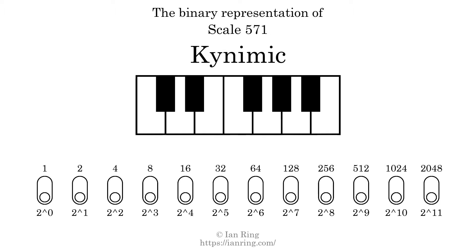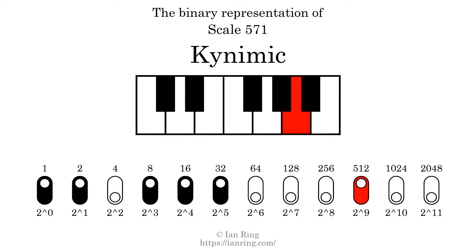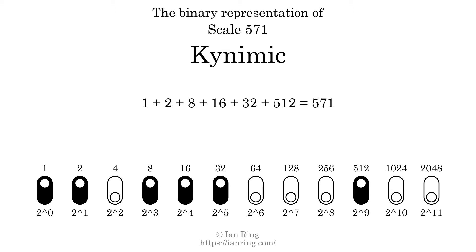The binary representation of this scale is determined by mapping tones of the scale to binary digits. Each binary digit represents a power of 2. To get the scale number, we add the powers of 2 together. The powers of 2 that are present in the scale, all added together, equals 571. That is why the scale number, in decimal, is 571. The scale number not only enumerates the scale with a unique index, but it also literally describes the tonal content of the scale.